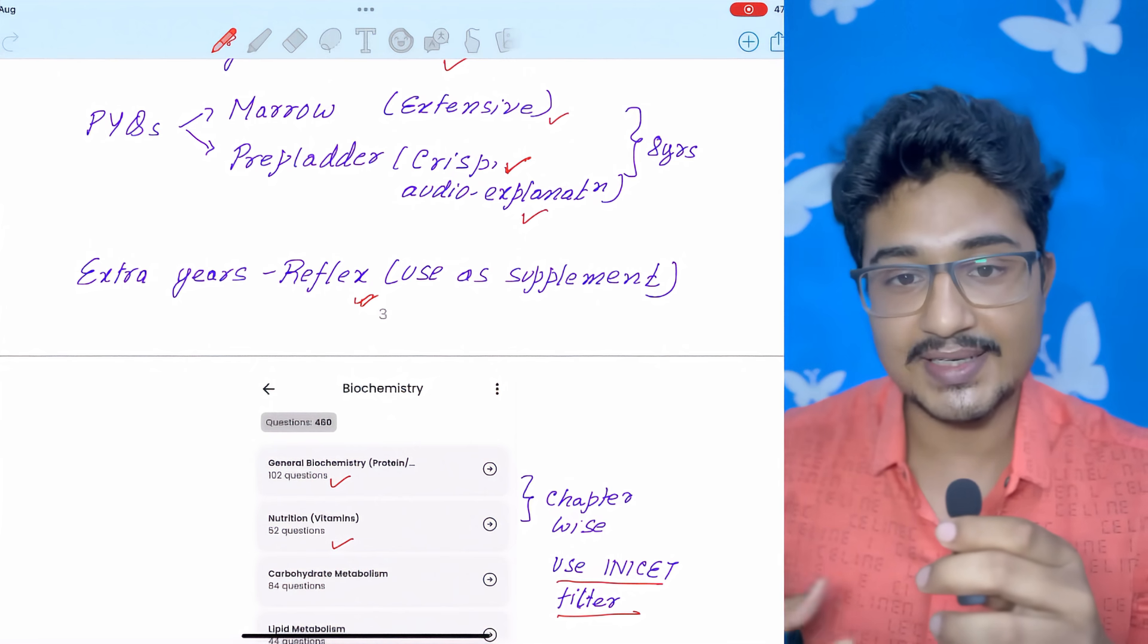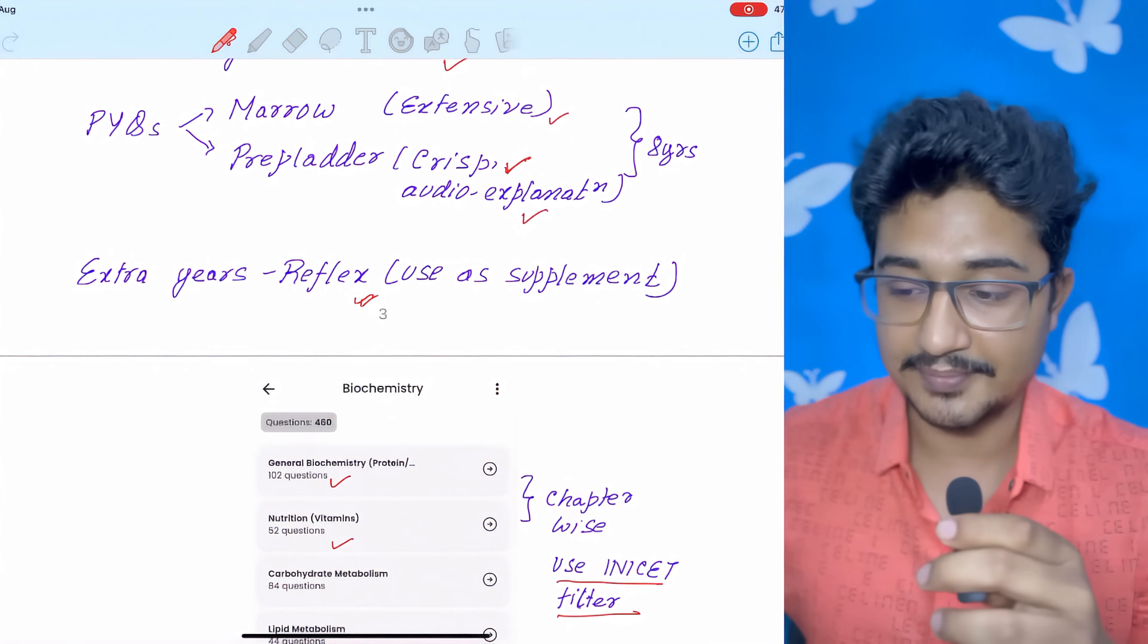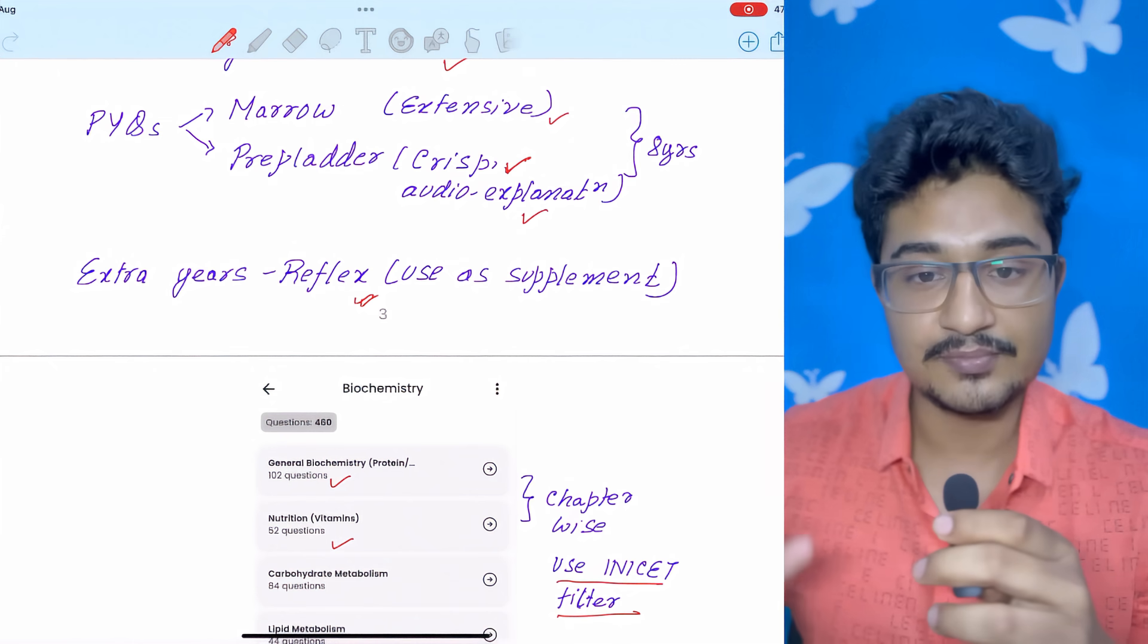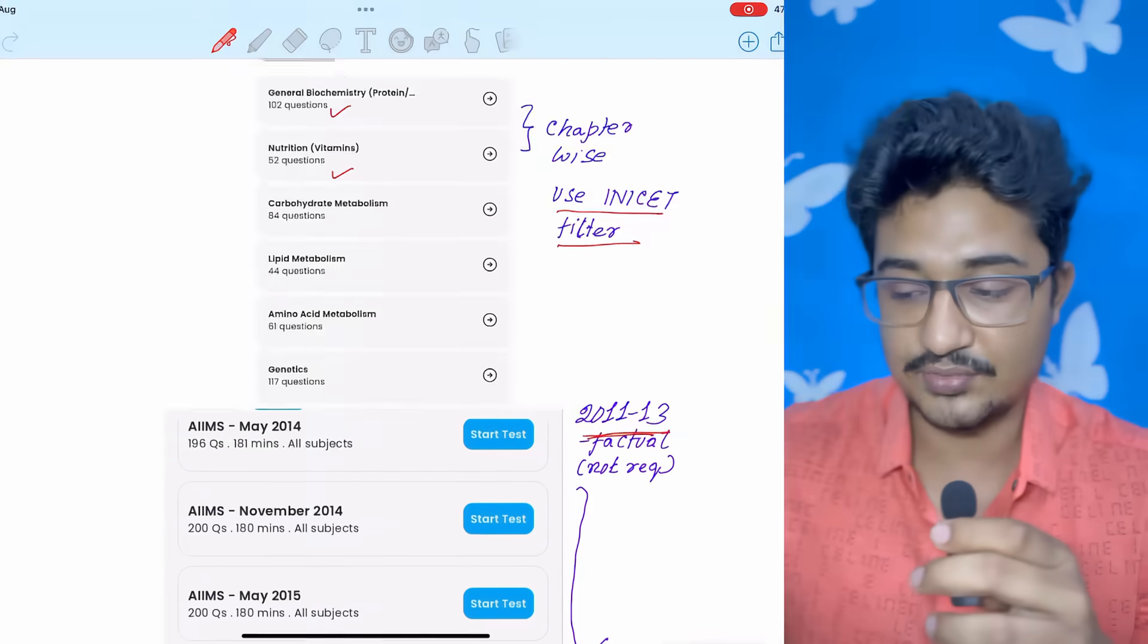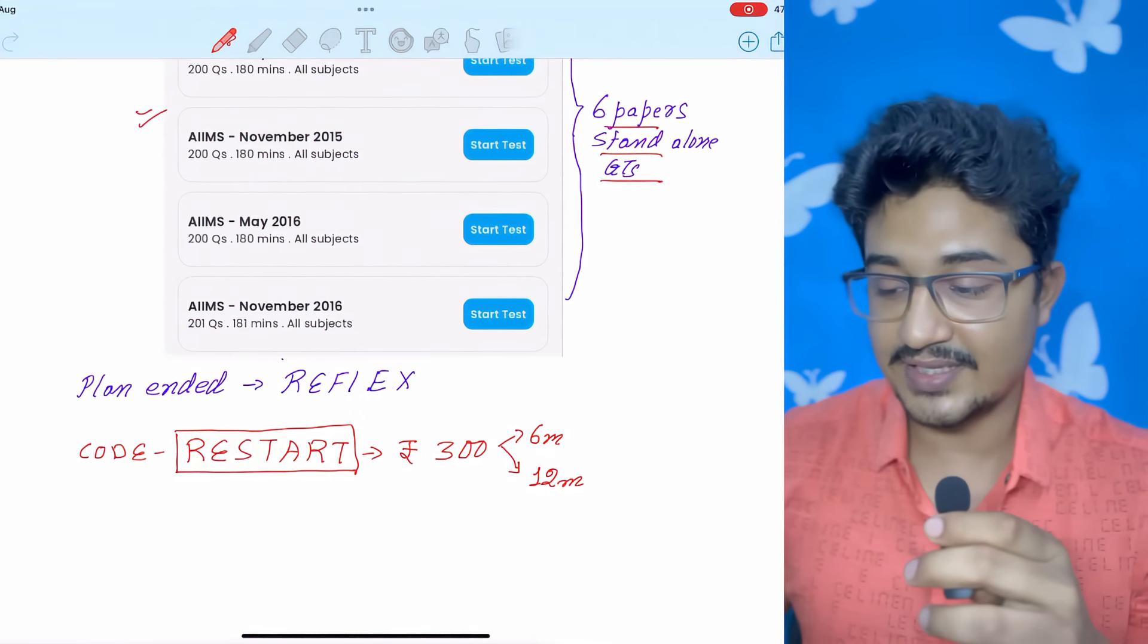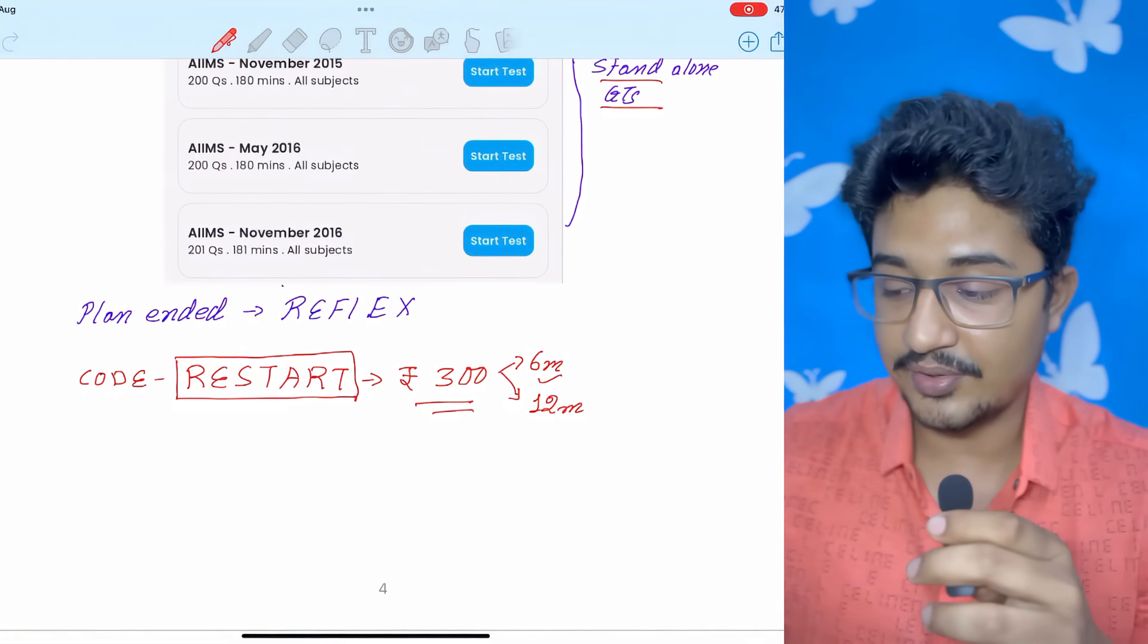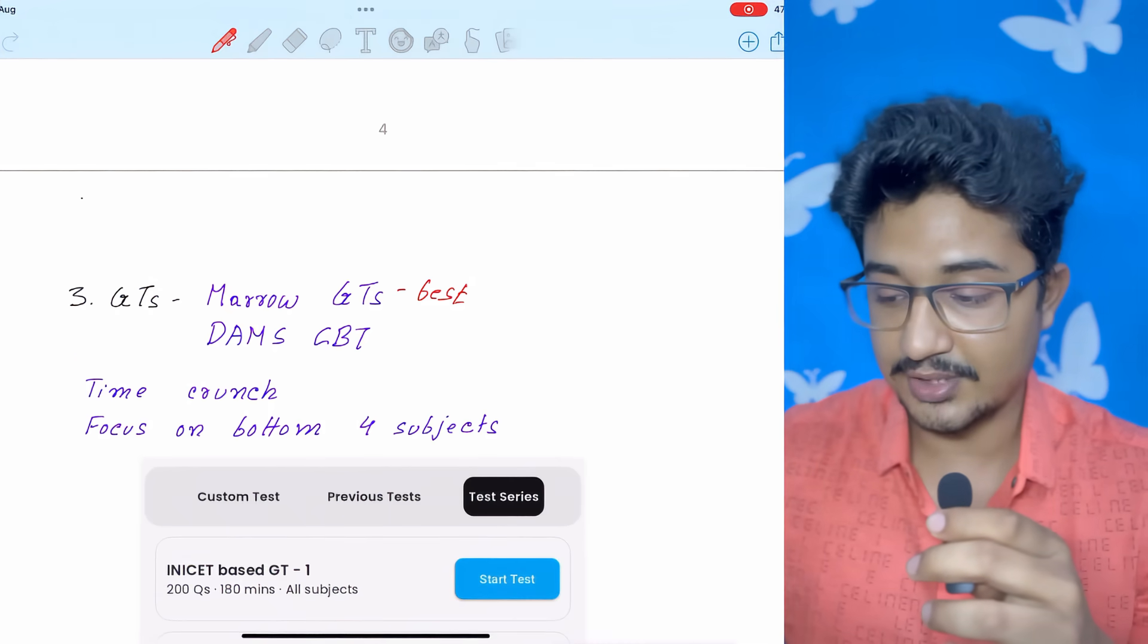Like if I go to gym, I take whey protein supplementation. But my main food is dal-chawal. So in that regard, if you are having Marrow or Prep Ladder, use it as the main platform for supplementing with the extra years. And for quick review, you can use Reflex. Why I am saying this? Because right now for Reflex there is an offer. If you use the code restart to restart your preparation, you will get flat 300 rupees off on six month and 12 month plan. And it is very much affordable also.